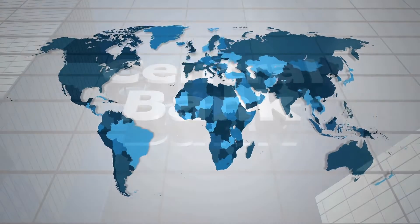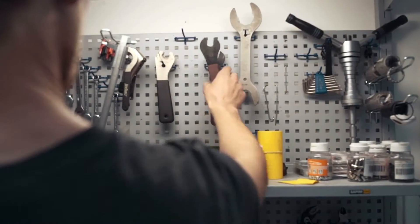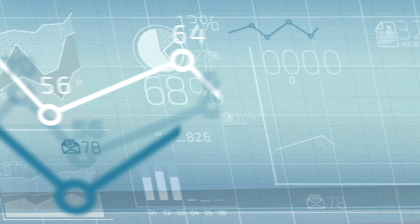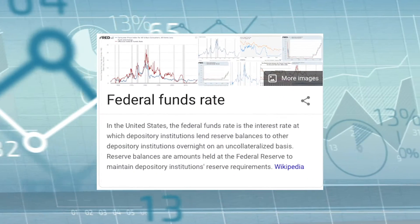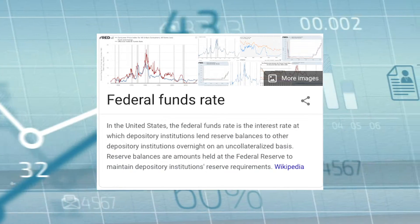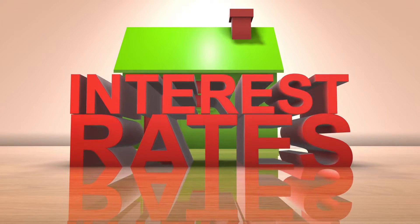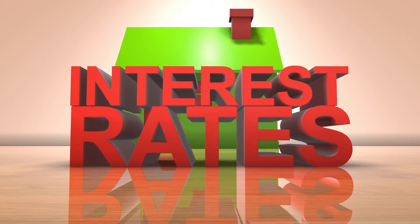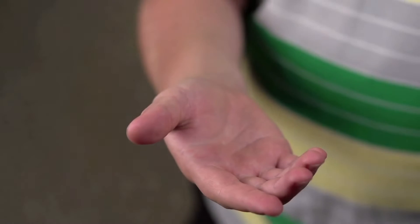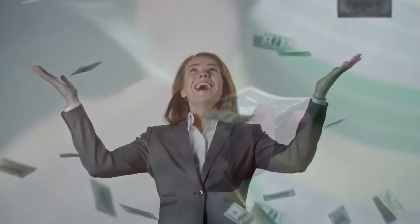In most countries around the world, there's a central bank that has a number of tools at their disposal to influence the country's economy. One thing that the central bank has control over is the federal funds rate, which is essentially the interest rates that banks charge other banks to lend money. If a federal funds rate is low, then a bank can borrow money at a pretty low rate, meaning that it can also lend money at lower rates and still turn a profit.